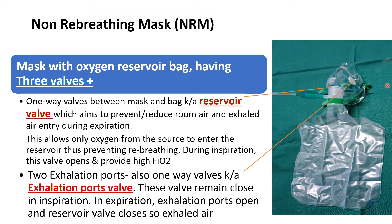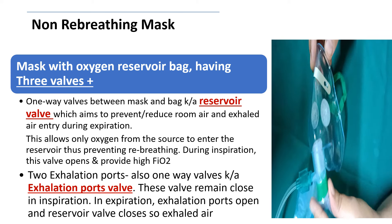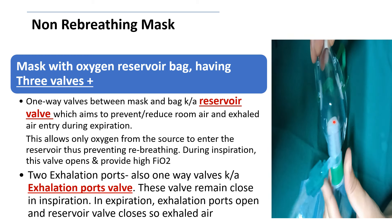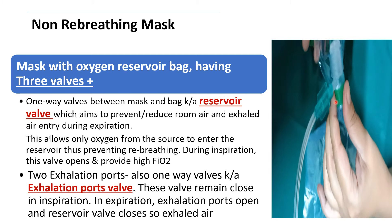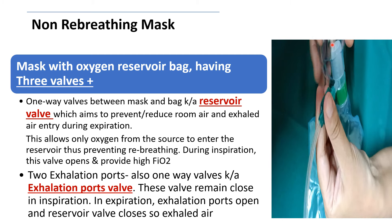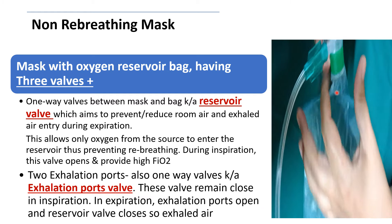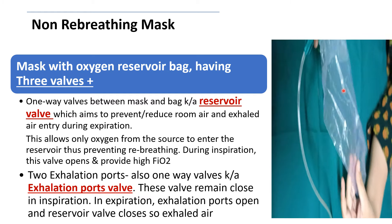This is the main difference between the NRM and PRM. In this video you can also see the one-way valves at the exhalation ports, the reservoir valve, and the oxygen tubing connected to the reservoir bag. The reservoir bag has a one-liter capacity.